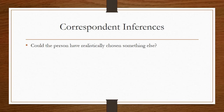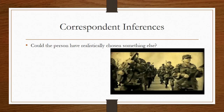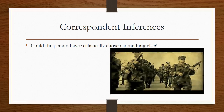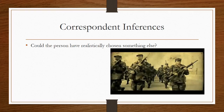The theory of correspondent inferences says the first question we ask is: could the person have realistically chosen something else? For example, if somebody's in the military and they do something because of an order, you're going to say they probably did it for an external, situational reason — not an internal one.